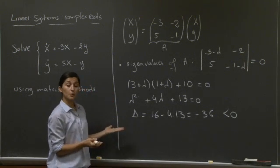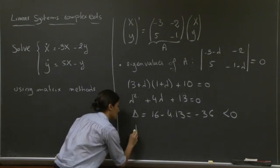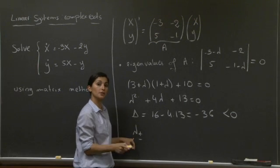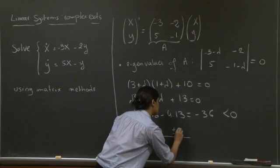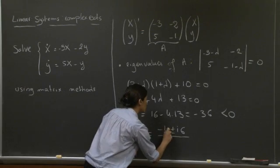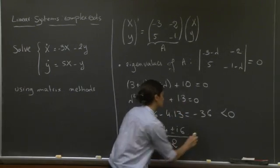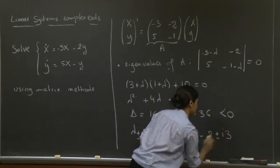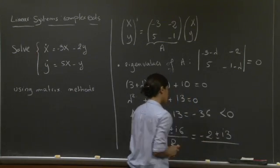And that tells us that we're going to have two complex roots, which is the title of the recitation. And these two complex roots are going to be complex conjugates of each other. So the formula gives us plus or minus i times 6 for the root of the discriminant. Here we have minus 4 over 2. So the two roots are basically minus 2 plus or minus 3i. So these are our two roots.